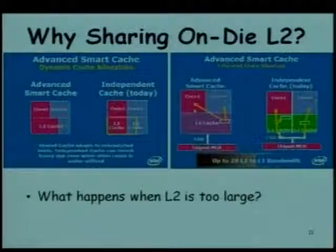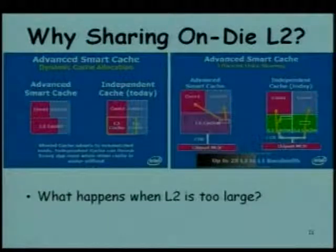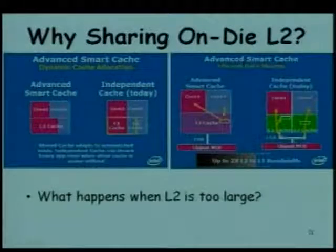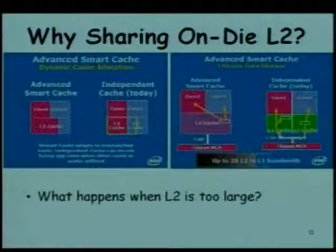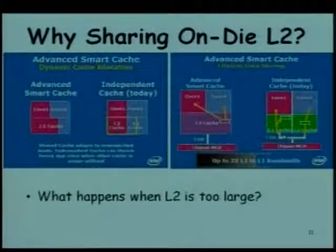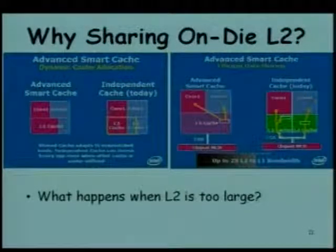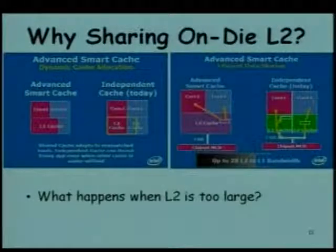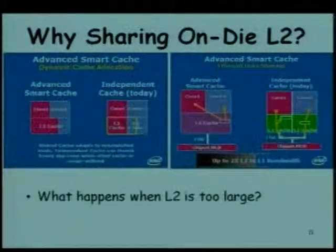A second argument is that a single copy of data is used by both caches, whereas with independent caches there would be two different copies. We will still have to see the performance implications because these are two schools of thought: one is having independent L2 caches, the other is shared caches.